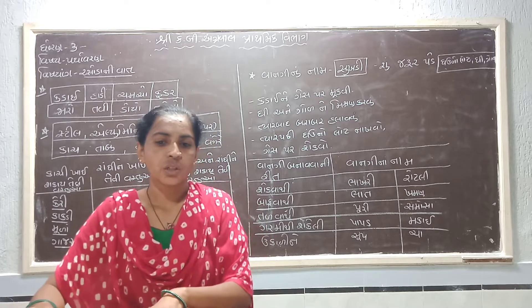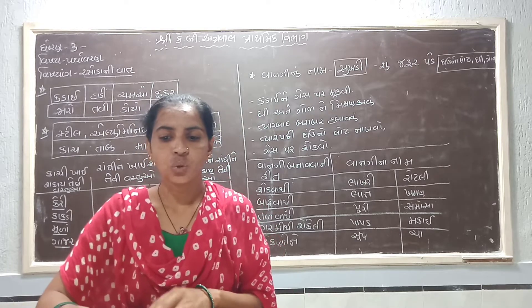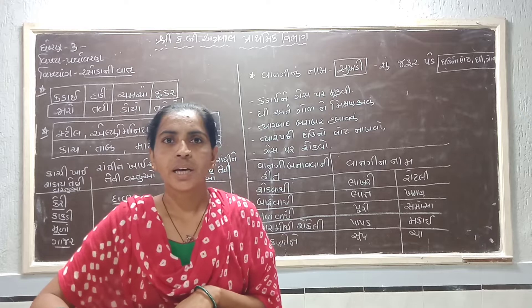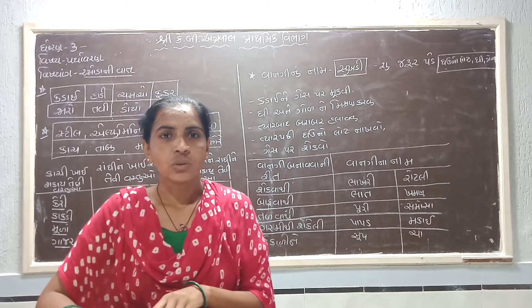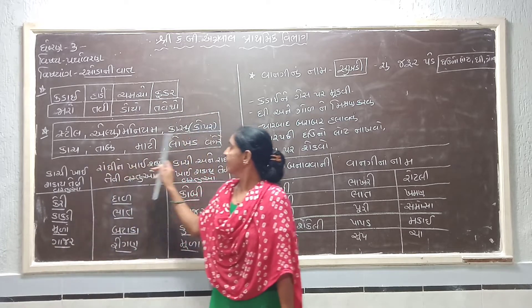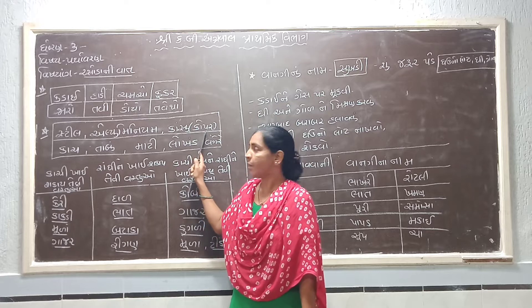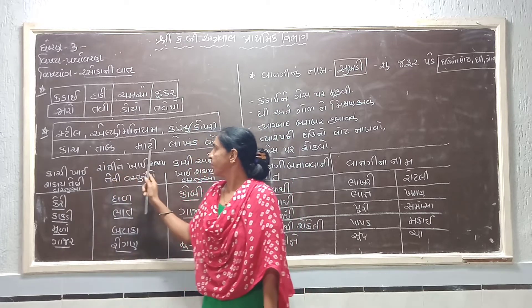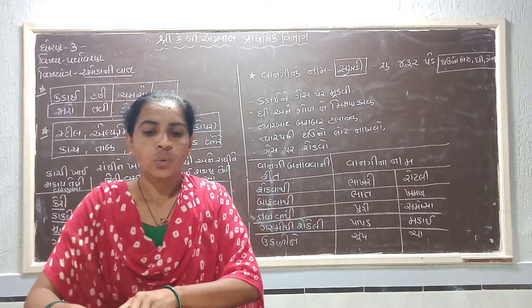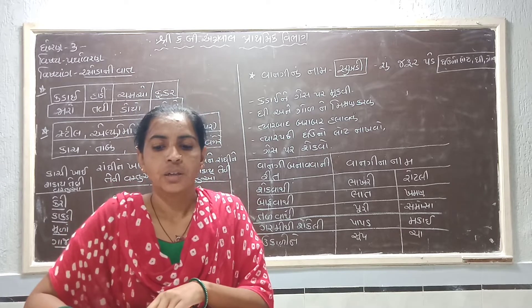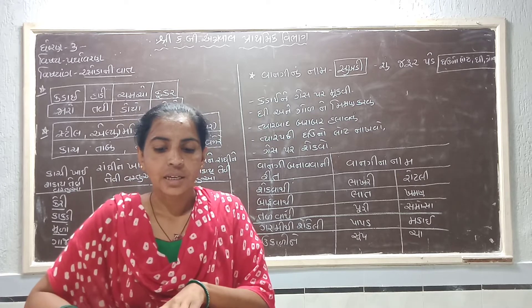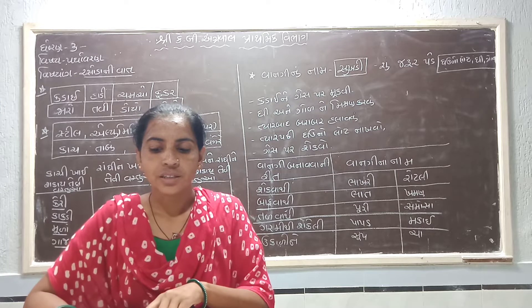એના પછી રસોઈમાં વપ્રાતા ઘણા બધા વાસણ તમે જોયા હશે, તમારા ઘરમાં રસોઈ બનાવા બીજા કાય વાસણો વપ્રાય છે તેના નામ. યાદી કરો: વાસણો શાના બનેલા હોય છે, તો વાસણો ઍલ્યુમિનિયમ, એ ખાન રાંધીને ખાય શકાય.